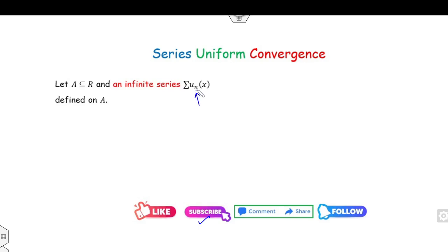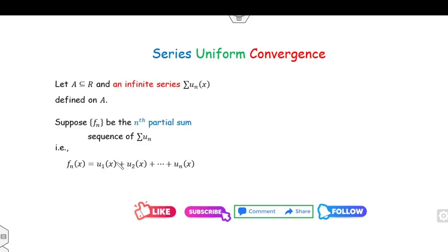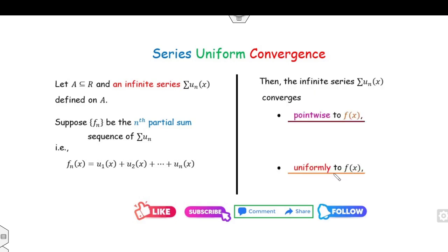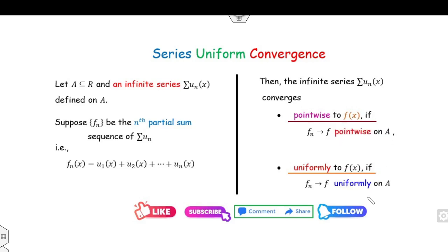If you have the infinite series of un defined on a subset of the real line, then you can define the nth partial sum sequence fn as: fn(x) = u1(x) + u2(x) + ... + un(x). Then you can say the series un converges pointwise and uniformly to the function f(x) if the sequence of partial sums fn converges to f pointwise and uniformly respectively.